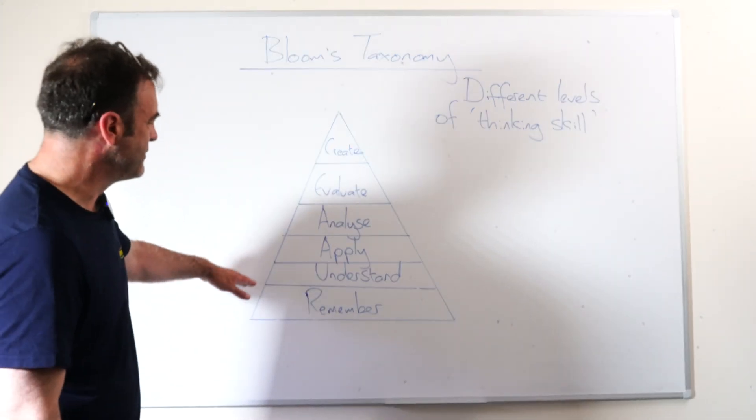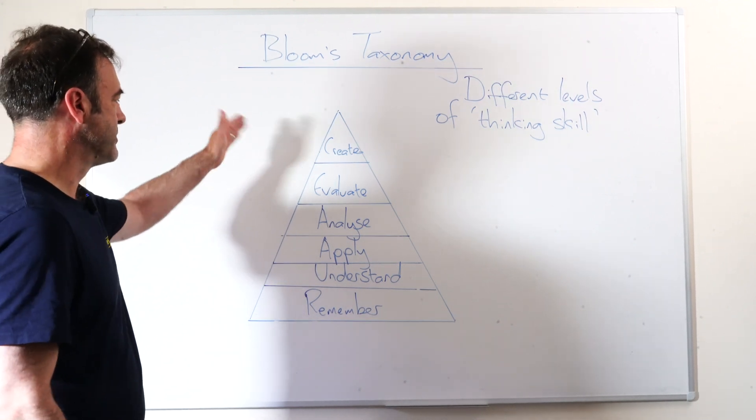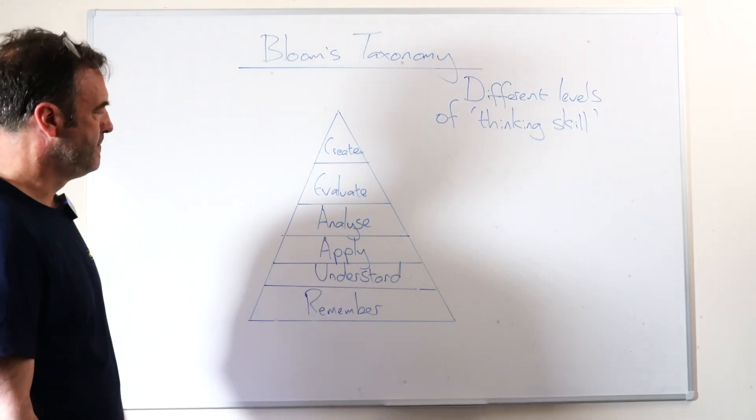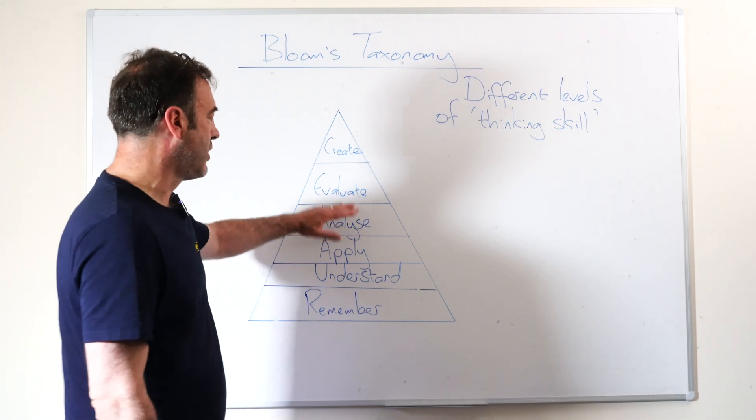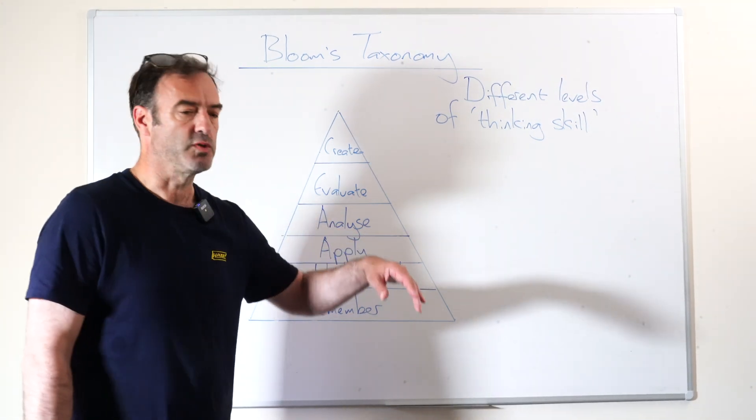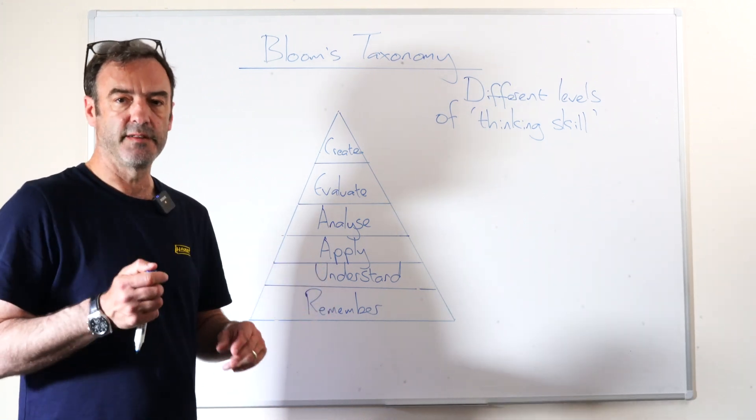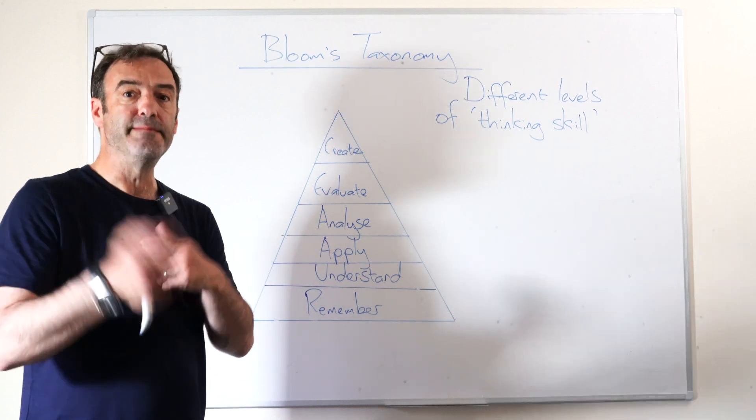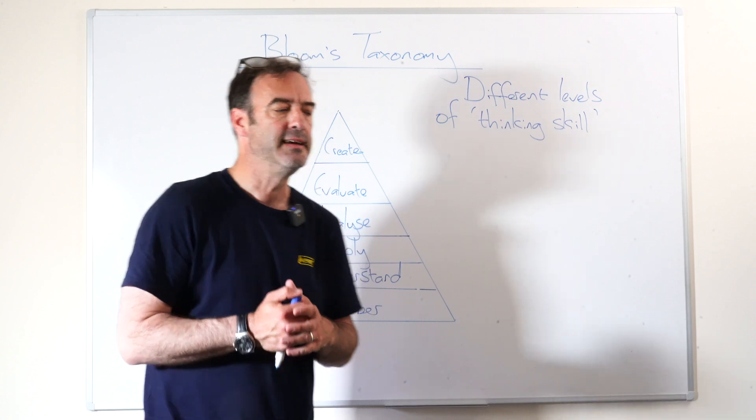You can see that the levels of thinking required step up quite considerably. My thoughts are always that maths is difficult. At the higher level of Bloom's Taxonomy, you're talking about getting a maths question in reverse from the way you'd expect it.